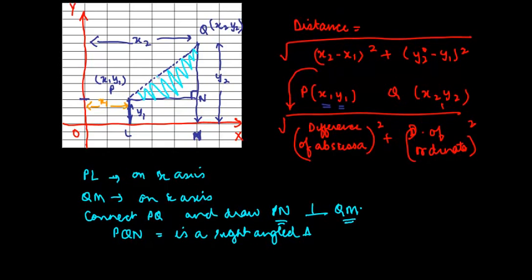Now if this is a right angled triangle, then we can simply write PQ square is equal to QN square plus PN square.